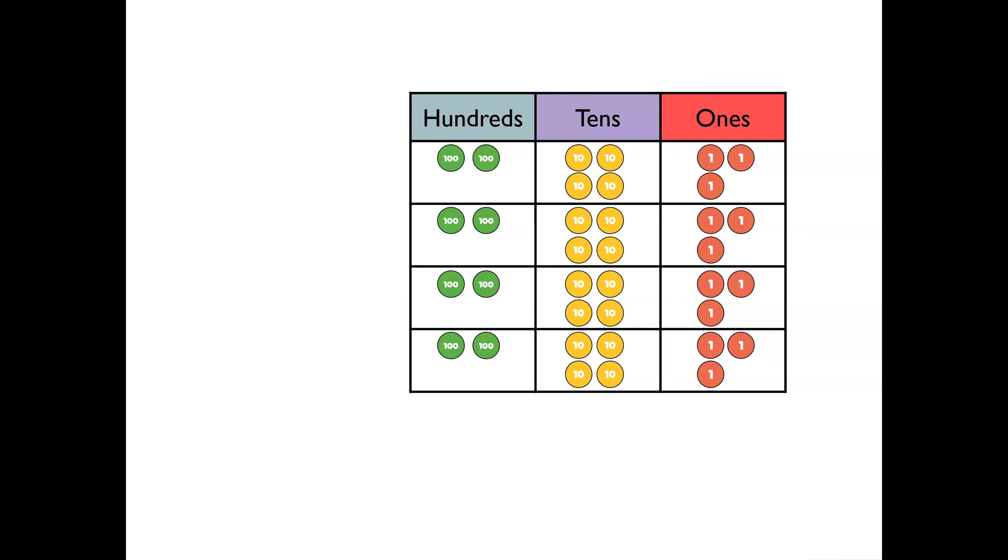Here each row has 2 hundreds, 4 tens and 3 ones. So the number is 243. There are 4 rows, so it's 243 four times. The calculation is 243 multiplied by 4. We are going to use the place value grid to really see what's going on when we multiply this number by 4.